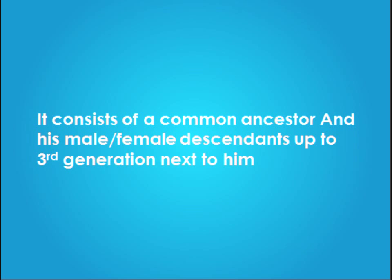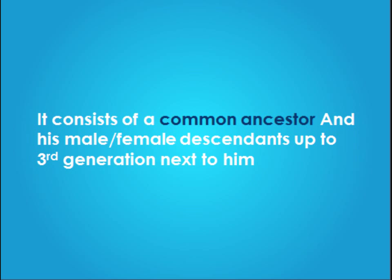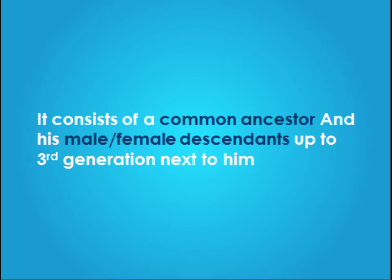An HUF is basically a family that consists of a common ancestor and his male or female descendants up to the third generation next to him. The third generation means: you yourself are the first generation, your kids are the second generation, and their kids are the third generation. So, one family's elder, their children, and their children's children — that is the maximum extent of an HUF.